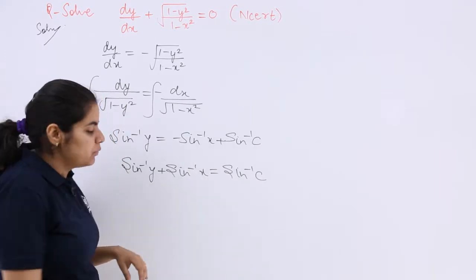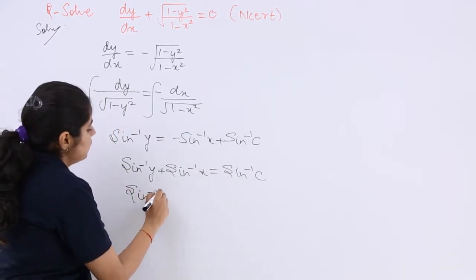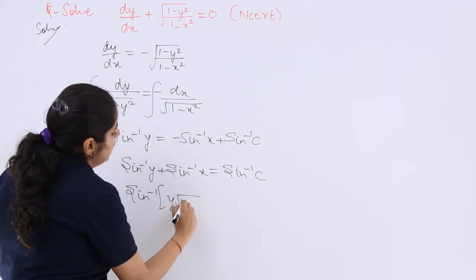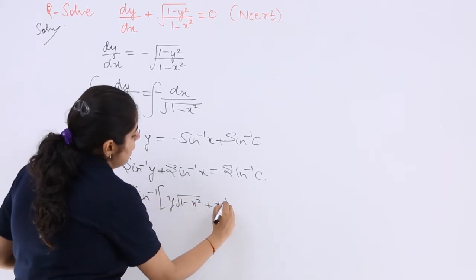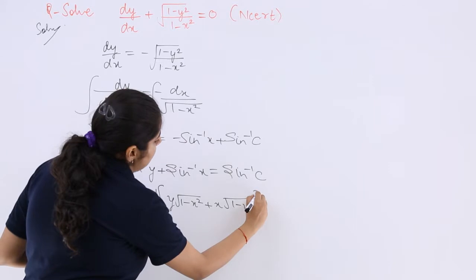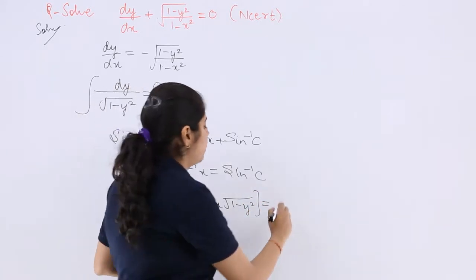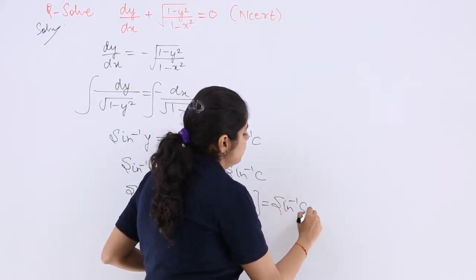Now sin inverse a plus sin inverse b is what? It should be sin inverse y multiplied by under root 1 minus x square plus x multiplied by under root 1 minus y square. This is the formula and here it is sin inverse c.